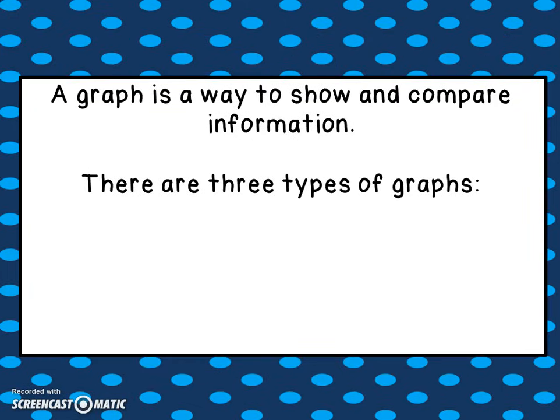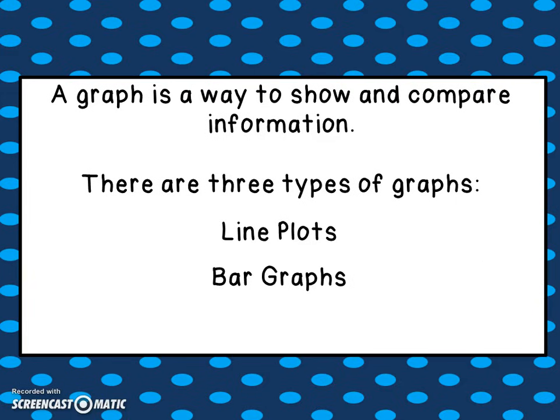A graph is a way to show and compare information. When we're collecting things — say you want to find out how many green Skittles are in several bags, or how many of your friends hit home runs during the baseball season — we can present that information using a graph. There are three types of graphs: a line plot, a bar graph, and a picture graph.